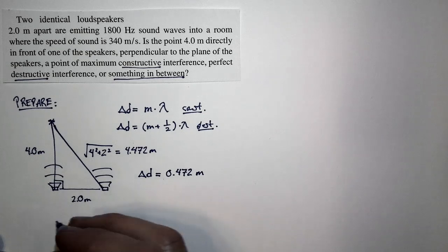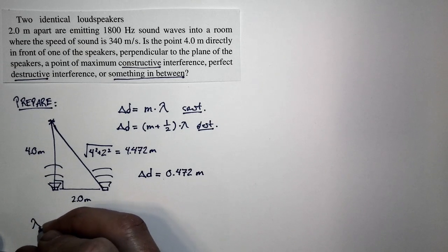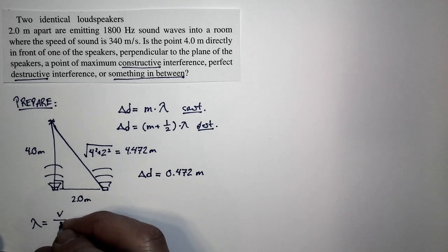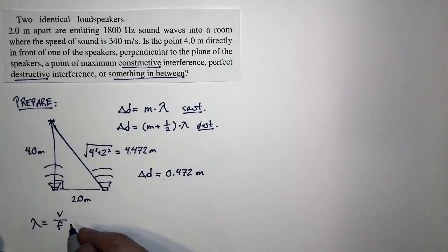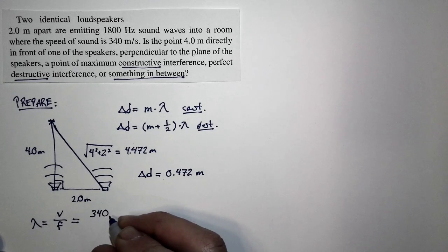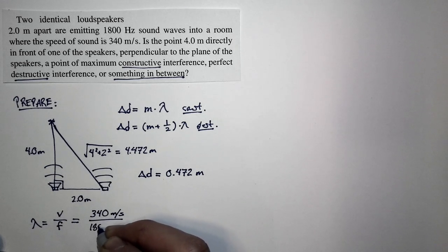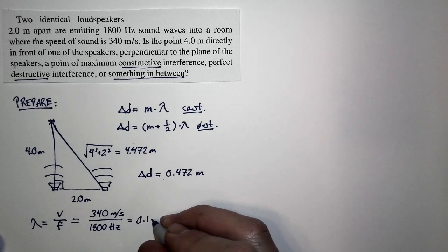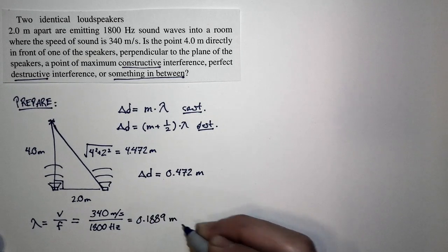Another important number is the wavelength of the sound. The wavelength is related to the frequency. If we take our fundamental relationship for sinusoidal waves and rewrite it, the wavelength is V over F. V is 340 meters per second, F equals 1800 hertz. We'll keep some extra significant figures to avoid rounding errors. We end up with a wavelength of 0.1889 meters.